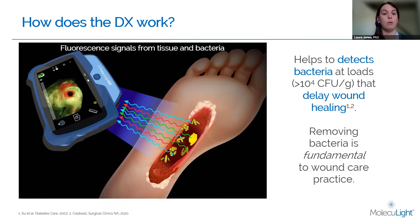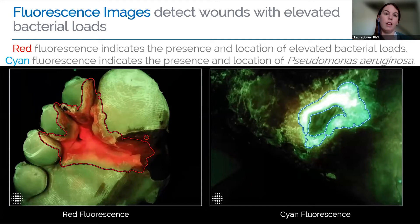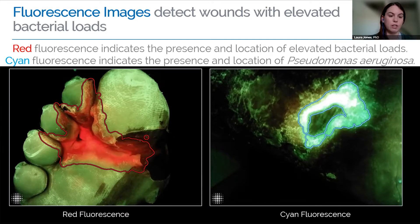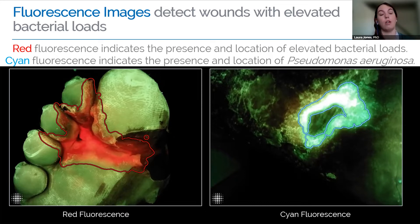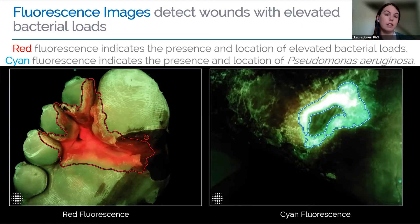Once you have this information, you can then go forward and begin to remove the bacteria, which is fundamental to wound care practice. The fluorescence imaging will detect wounds with elevated bacterial loads based on the presence of either red or cyan fluorescence. Red fluorescence indicates the presence and location of elevated bacterial loads — it won't tell you which bacterial species, just that it's there and above our threshold of 10 to the 4 CFU per gram. Cyan fluorescence, which appears as a bright white color surrounded by blue-green, indicates the presence and location of Pseudomonas aeruginosa specifically, so you can treat that individual bacterial species at point of care.